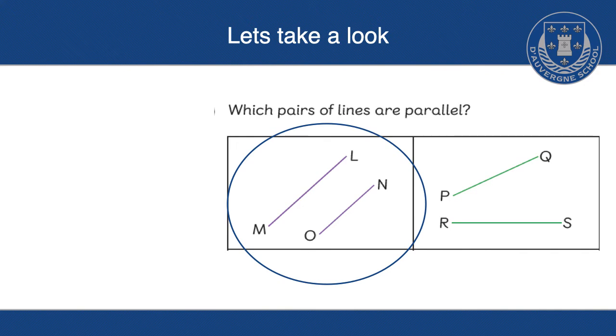So hopefully, you will recognise that those two lines, the purple lines, line M and L and O and N are parallel. Because they don't meet, but they run alongside one another. And the distance in between them doesn't get any bigger or smaller. It stays the same.